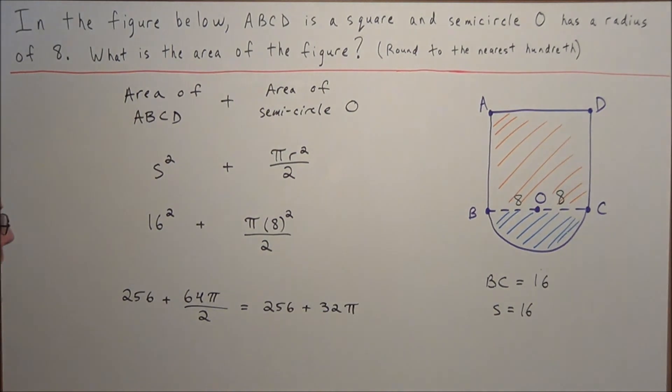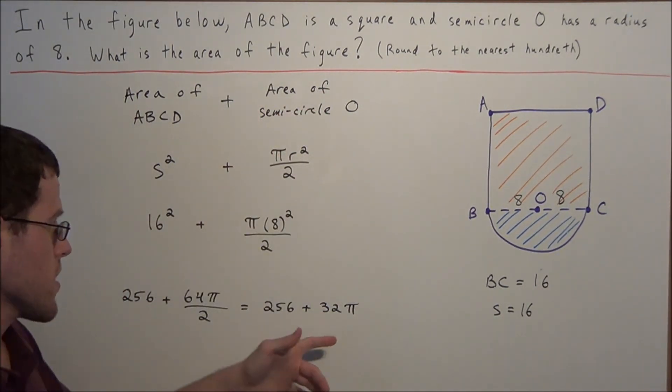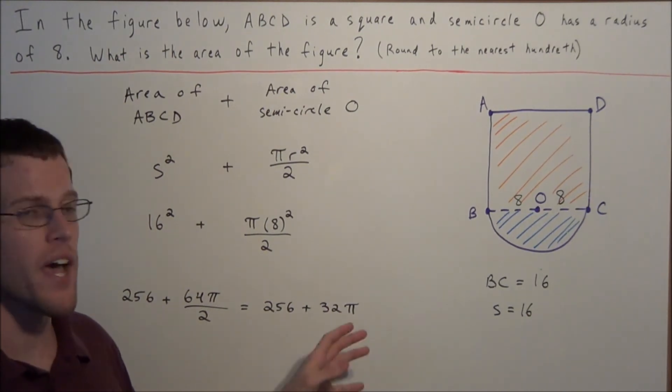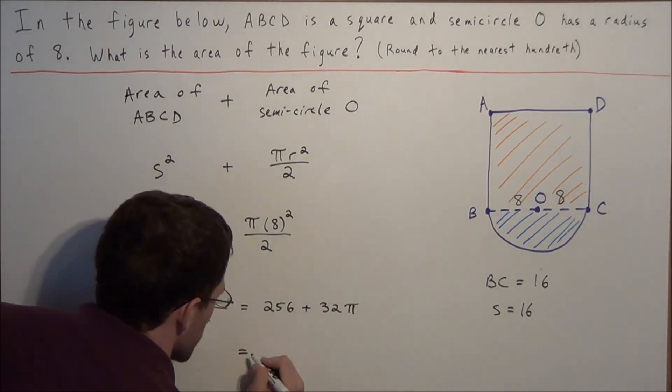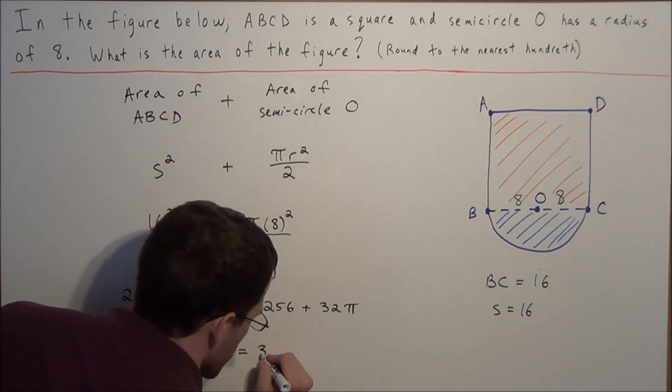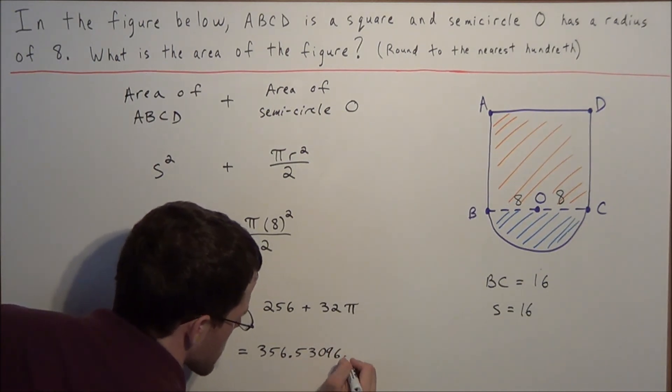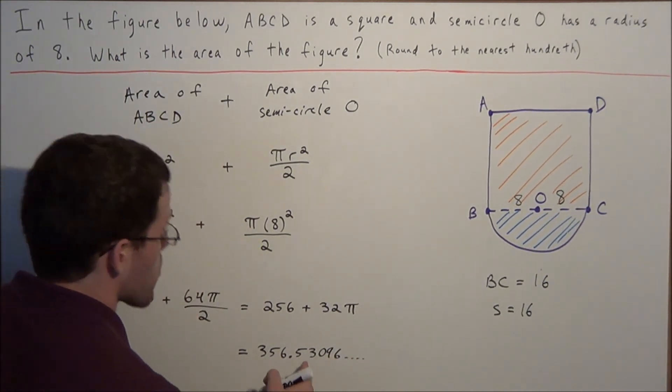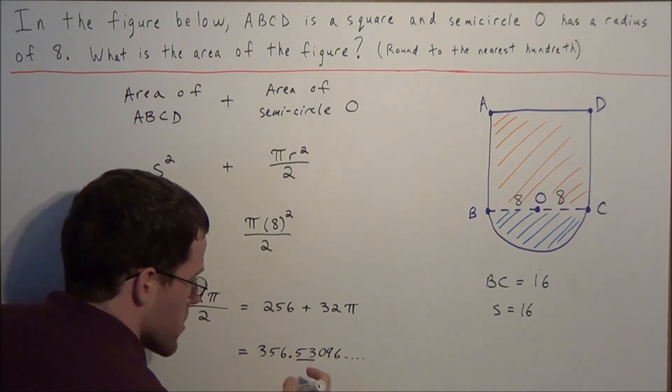But now remember our answer needs to be rounded to the nearest hundredth, which tells us that we need to substitute for the actual value of pi. So if we punch this in on our calculator, we should get 256 plus 32 times pi should give you 356.53096. This will continue on, but we're interested in rounding up to the hundredths place.